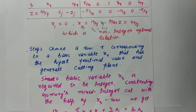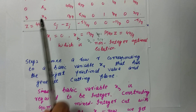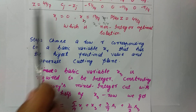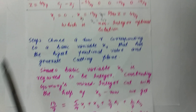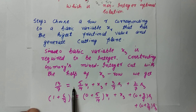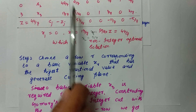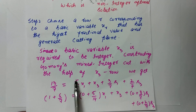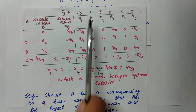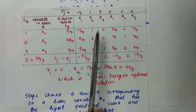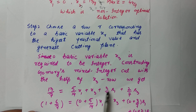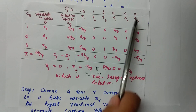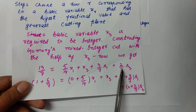We construct Gomory's mixed integer cut using the x3 row as the source equation. So 13/7 = (5/14)x1 + 0·x2 + 1·x3 + (3/7)s1 + 0·s2 + (2/7)s3. I have written here: (5/14)x1 + (3/7)s1 + (2/7)s3.